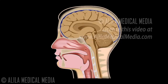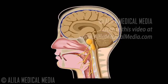Swallowing involves over 20 muscles of the mouth, throat and esophagus, which are controlled by several cortical areas and by the swallowing centers in the brainstem. The brain communicates with the muscles through several cranial nerves.